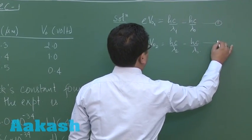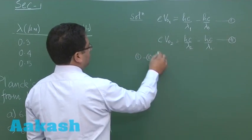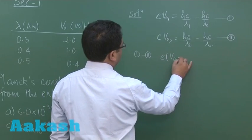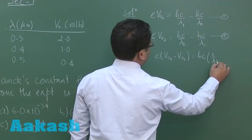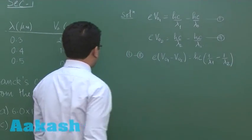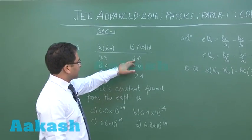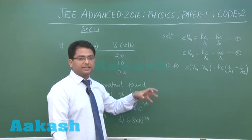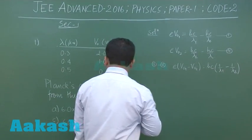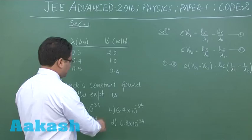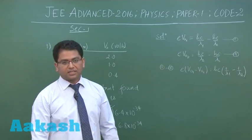Calling these equation 1 and equation 2, if I subtract equation 2 from equation 1, we get: e(V naught 1 − V naught 2) = hc × (1/λ1 − 1/λ2). Among the three data pairs given, any two — lambda 1, V naught 1 and lambda 2, V naught 2 — are sufficient. The third data point is in fact redundant. Solving with standard values gives the correct answer as option B. That covers question 1; let's proceed to question 2.